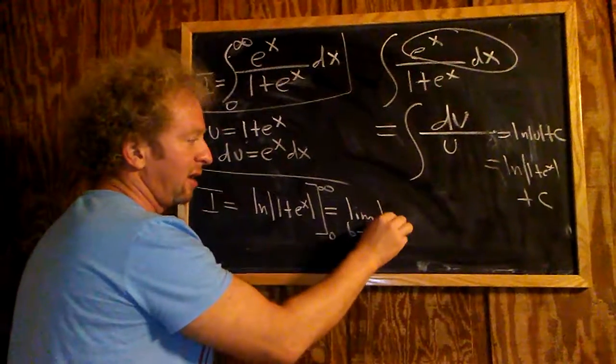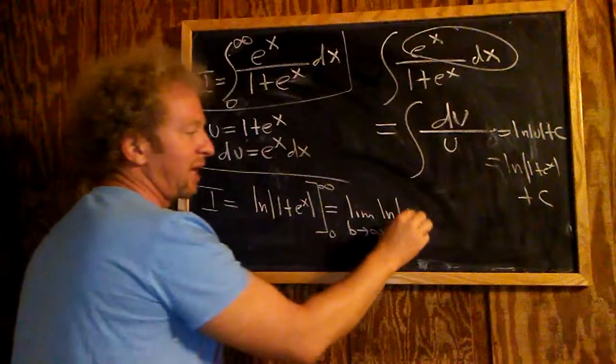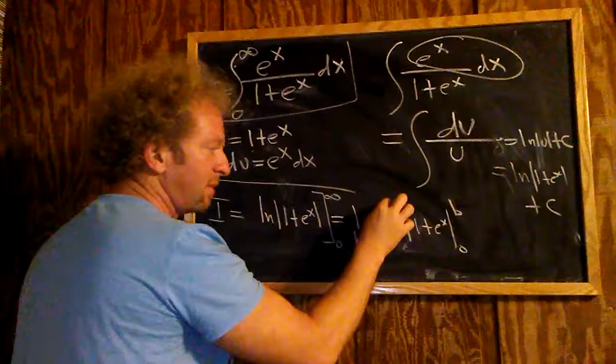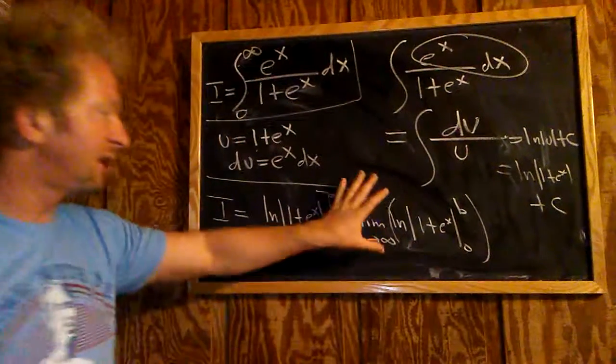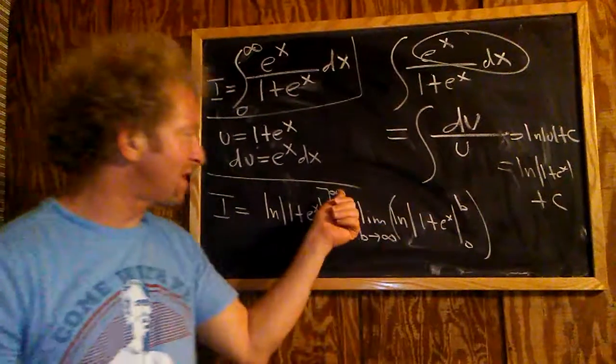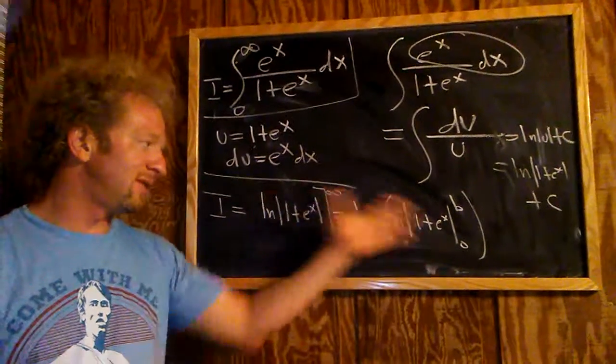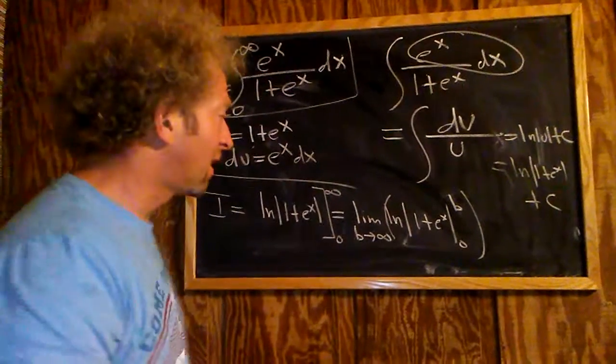And here we have ln, absolute value 1 plus e to the x. And we're going from 0 to b. Put this in parentheses. So we're taking the limit of this quantity. See, so you just basically replace the infinity sign with b, and then let b go to infinity. So these are actually equivalent. Okay, now we're ready to go.